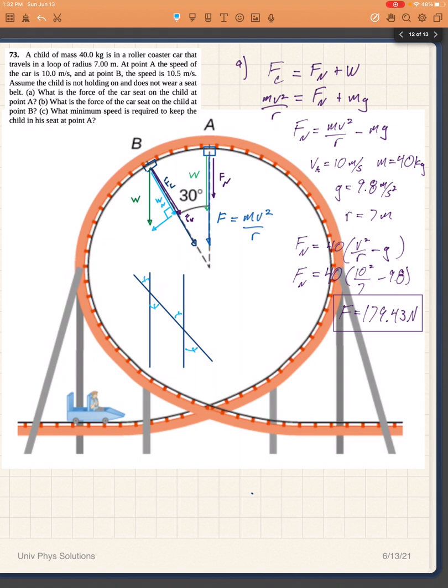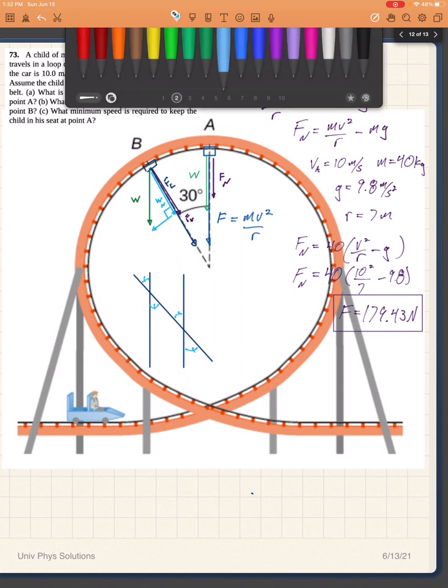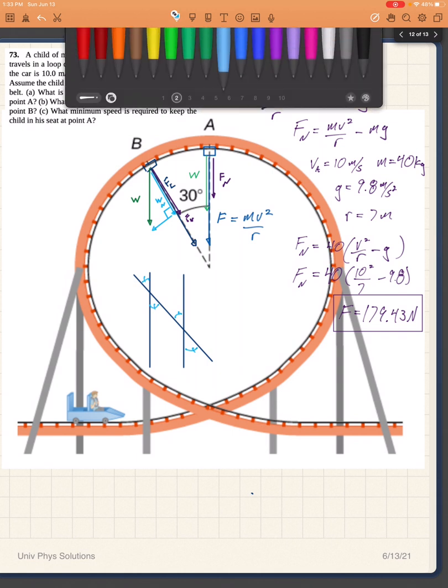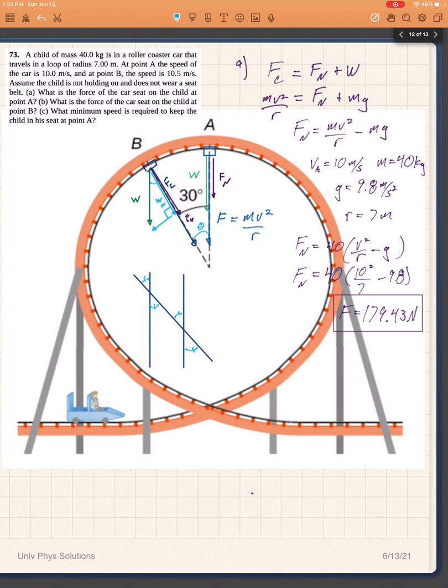So if this is 30 degrees, then this has to be 30 degrees there. So this angle theta has to be equal to this angle theta.